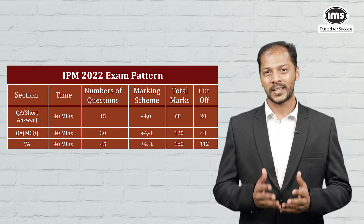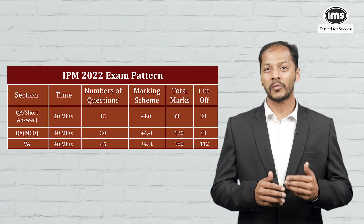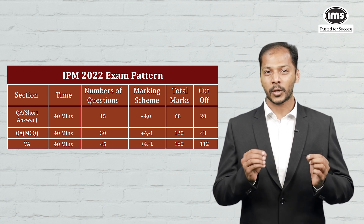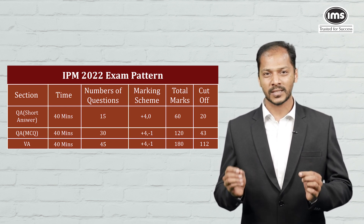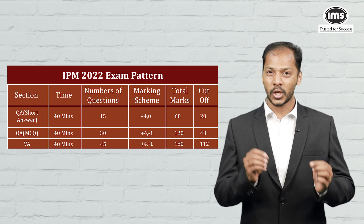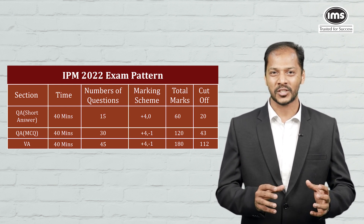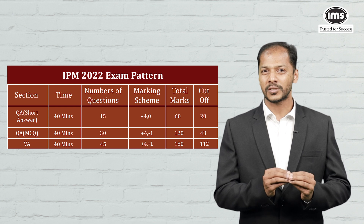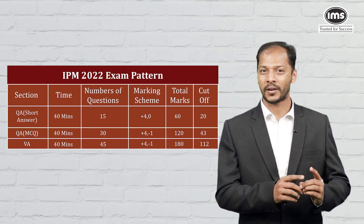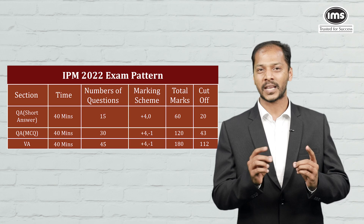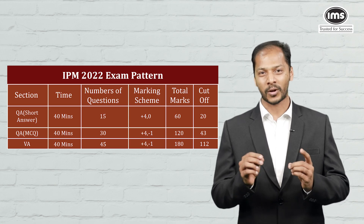Before we go ahead and discuss about the series, let's have a look at the test structure. The test consists of three sections, namely Quantitative Aptitude — that is QA — short answer section, QA MCQ section, and the Verbal Ability section. The number of questions in each section is different, but the time limit is the same for each section, that is 40 minutes.